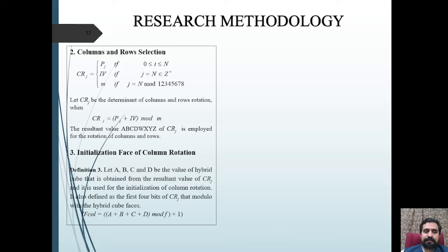The input of the key scheduling algorithm can be considered as N; m and IV are defined as a string of integer numbers. P(j) is the password obtained from the user. The overall input — the addition of initialization vector IV and the password P(j) — is taken modulo with respect to m, which gives the CRJ value, the resultant column-row selection value, represented using the corresponding equation.